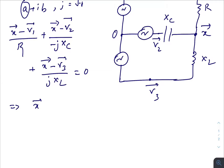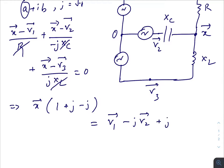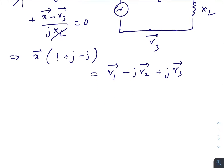Since R, X_C, and X_L are all equal, X vector times (1 + j − j) equals V1 vector − j·V2 + j·V3, giving us a simplified expression.